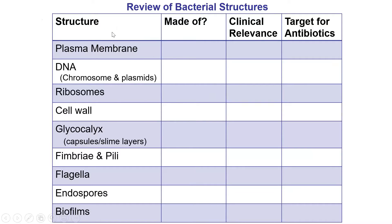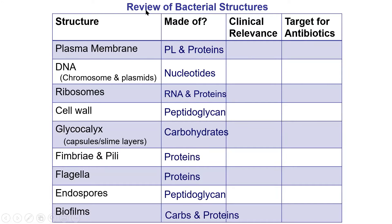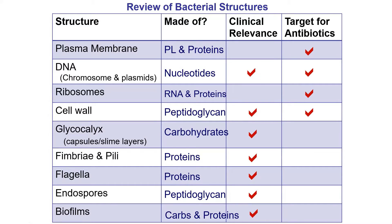This is a quick review of those bacterial structures — plasma membranes, DNA, ribosomes, capsules, slime layers. Many of them are clinically relevant: pili, capsules, and slime layers allow organisms to attach to human tissues, which can help cause disease. Some other components of bacterial cells are actually targets for antibiotics, and that's what I want to talk about right now.